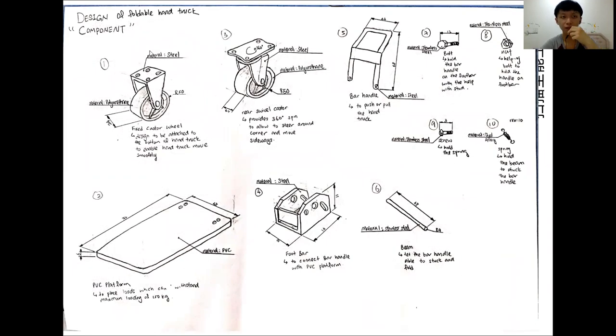And here is the component of our foldable hand truck. It has the fixed caster wheel, which is to attach the bottom of the hand truck to enable the hand to move smoothly. The rear swivel caster to provide 360 degree spin to allow to steer around corner and move sideways. And the bar handle is to push or pull the hand truck.